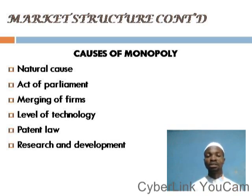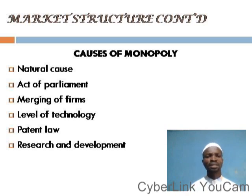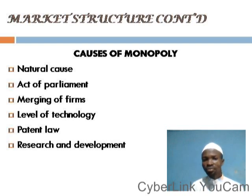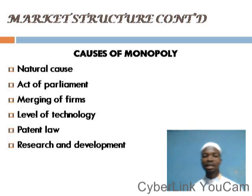Another cause is level of technology. Technology also plays a major role in making a firm assume monopoly power. If a particular firm is able to discover the most efficient technology — for example, shifting from labor-intensive to capital-intensive methods of production involving machinery — this enables the firm to reduce its cost of production, expand its output, and sell its products at a cheaper rate which competitors may not be able to match, thereby forcing them out of the market. Through improved technology, monopoly status can be assumed.